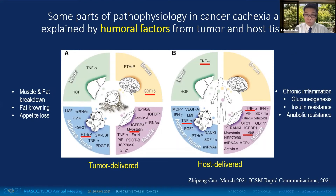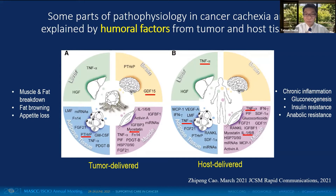We now know that the causes of cancer cachexia can be partially explained by humoral factors secreted from the tumor or host tissue. For example, myostatin or PTH-related protein promote muscle or fat degeneration respectively, while GDF15 affects the hypothalamus and suppresses appetite. From the host tissue, inflammatory cytokines such as TNF-alpha, IL-1, or IL-6 provoke insulin resistance in fat and muscle, promote gluconeogenesis in the liver, and result in anabolic resistance.